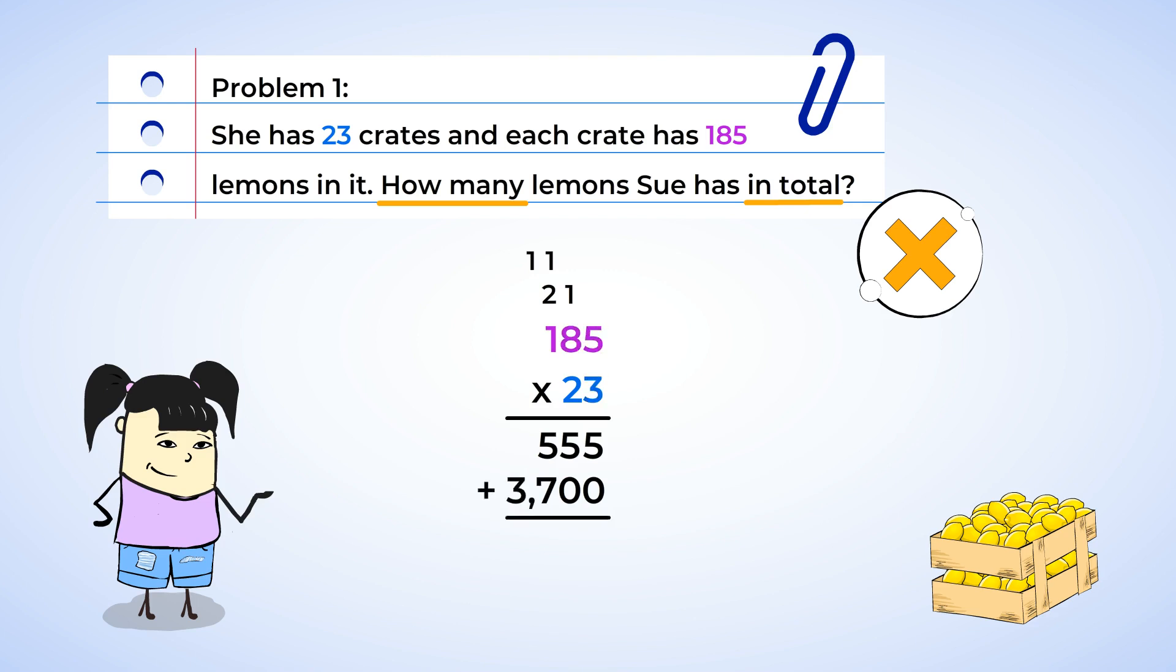Now we can add these two lines together to get our total amount. So 5 plus 0 is 5. 5 plus 7 is 12. The 2 stays, and the 1 is carried over. 1 plus 3 is 4. And our final answer is that Sue has 4,255 lemons. She can make a lot of lemonade out of all those lemons.